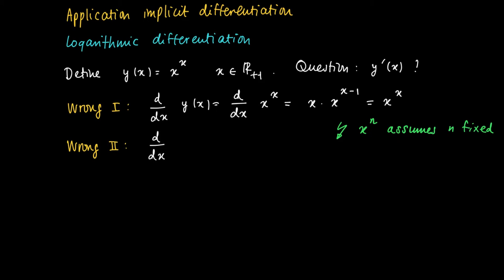Another wrong idea is to use the a to the power x formulation, so that a equals x, so that we get the ln of x times x to the power x. But this goes astray in the same fashion. If we consider x to the power x as a function a to the power x, this assumes that a is a fixed number larger than zero, but now a equals x and it's a variable.